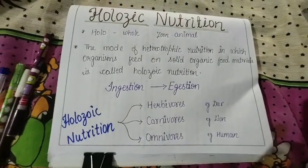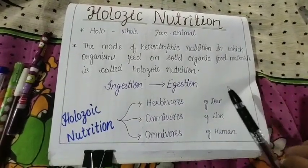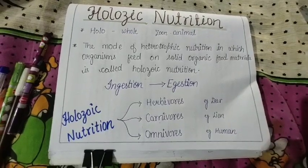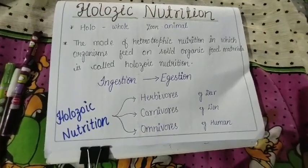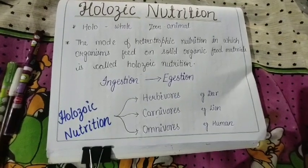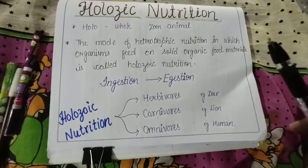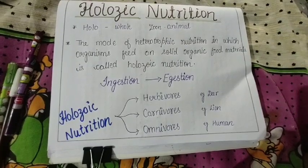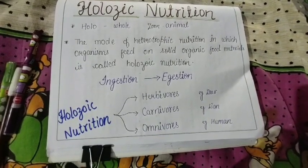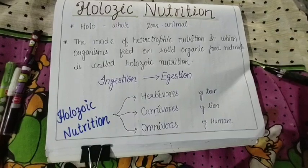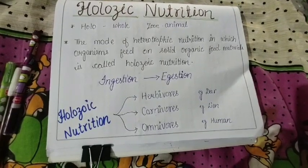The last type of heterotrophic nutrition is holozoic nutrition. 'Holo' means whole. The definition is: the mode of heterotrophic nutrition in which organisms feed on solid organic food materials is called holozoic nutrition.